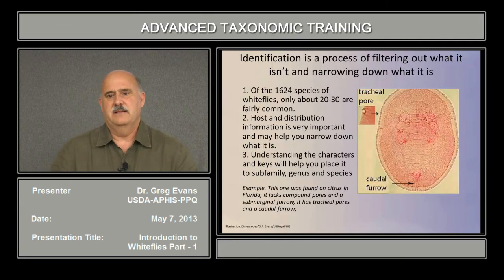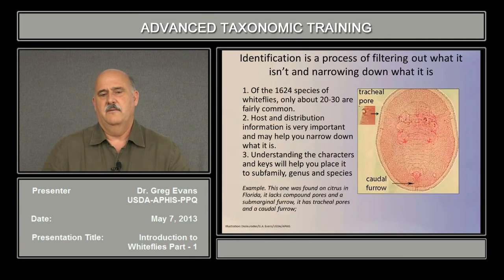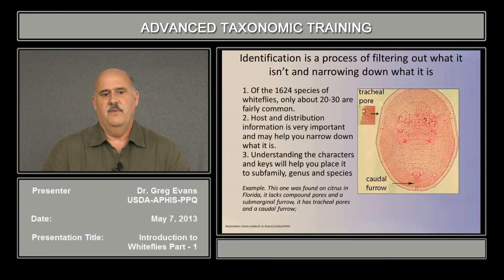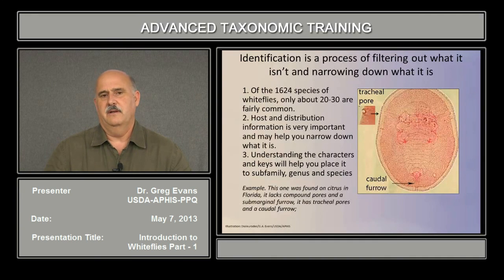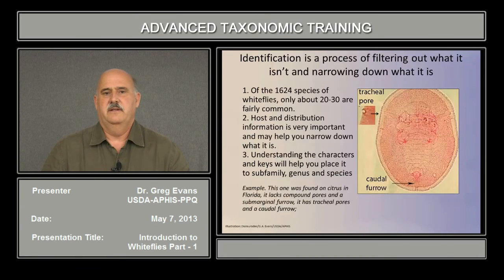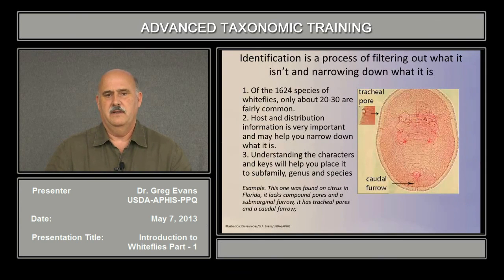The identification process is often a process of filtering out what it isn't and narrowing down what it is. Of the 1,624 species of white flies, only about 20 or 30 are fairly common, and fewer still are very common. Having the host and distribution information is very important — it may help you narrow down what it may be even before you get it on the slide.